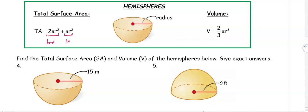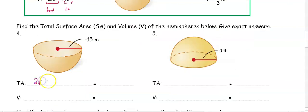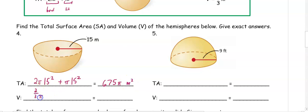Using the formulas, our radius is 15. We have 2π(15²) plus π(15²). Doing those separately and adding them together, we get 675π meters squared. To get our volume, it is 2/3π(15³), which is 2,250π meters cubed.